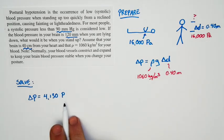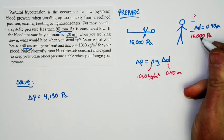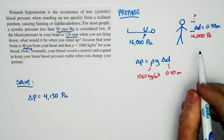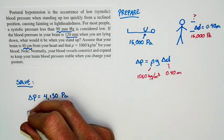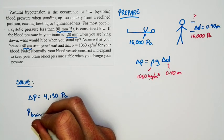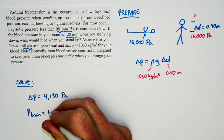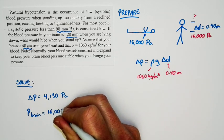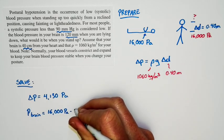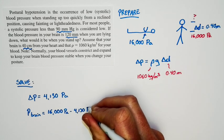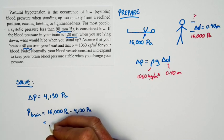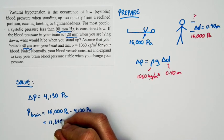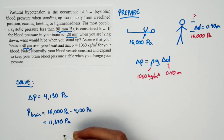But the question doesn't ask for the change in pressure. The question asks, what is the pressure at the brain? Well, the pressure at the brain is going to be equal to the pressure at the heart minus the difference. So the pressure at the brain is going to be equal to 16,000 pascals minus the difference, 4,130 pascals or 11,870 pascals. And if we convert that back to millimeters of mercury,